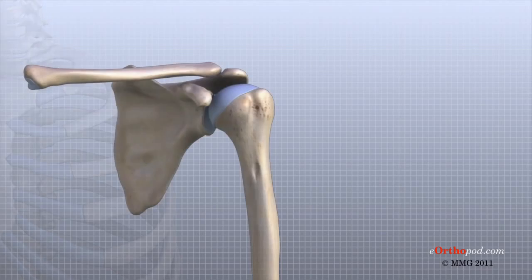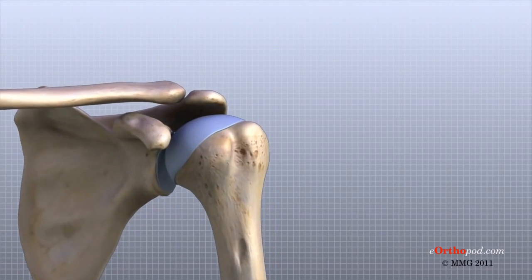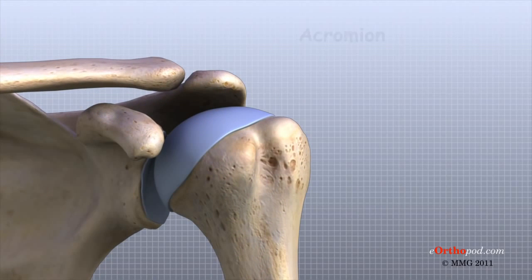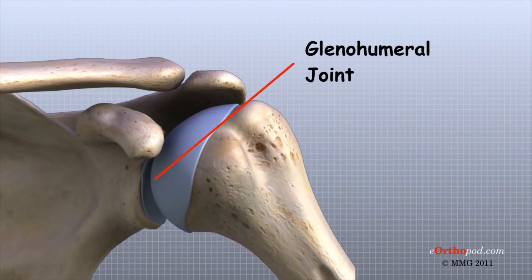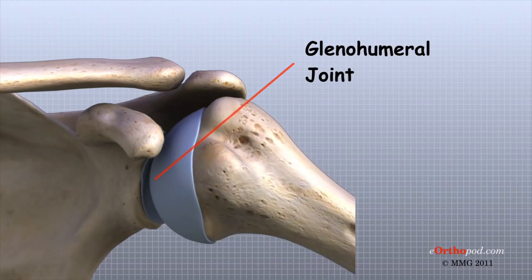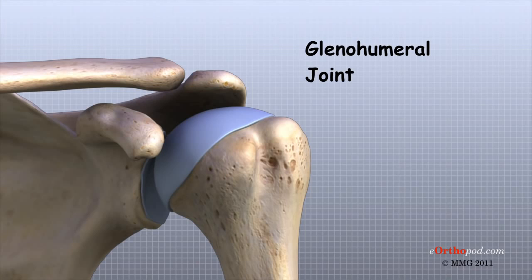The roof of the shoulder is formed by a part of the scapula called the acromion. There are actually four joints that make up the shoulder. The main shoulder joint, called the glenohumeral joint, is formed where the ball of the humerus fits into a shallow socket on the scapula.